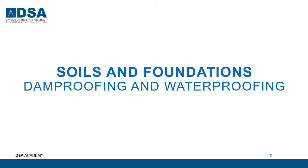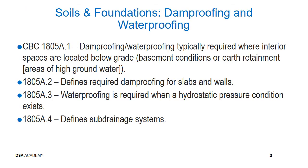The last section covers damp proofing and waterproofing. CBC section 1805 a.1 states that damp proofing and waterproofing is typically required where interior spaces are located below grade, such as basement wall conditions or earth retaining walls near high groundwater. Section 1805 a.2 defines required damp proofing for slabs and walls.